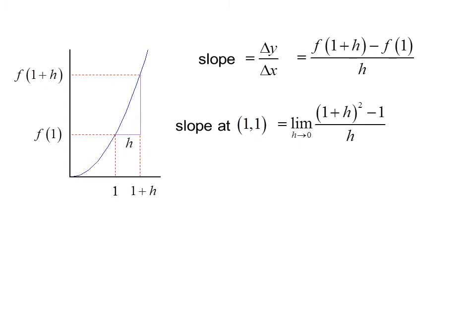The slope at (1,1) then is the limit as h approaches 0 of (1 plus h) squared minus 1, all over h. If we expand (1 plus h) squared, we get the limit as h goes to 0 of 1 plus 2h plus h squared minus 1, all over h. The 1s cancel out, and we can factor out an h in the numerator, so we have the limit as h goes to 0 of h times (2 plus h) all over h. We can cancel an h, and now as h goes to 0, what we have left is 2.